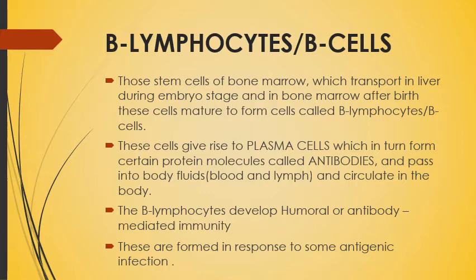The main characteristics of B lymphocytes: these cells give rise to plasma cells, which in turn form protein molecules called antibodies and pass into the body fluid, circulating in the body. Whenever there is an infection, B lymphocytes give rise to plasma cells, and those plasma cells release antibodies that circulate in the blood and lymph. B lymphocytes develop humoral or antibody-mediated immunity, and are formed in response to antigenic infection.